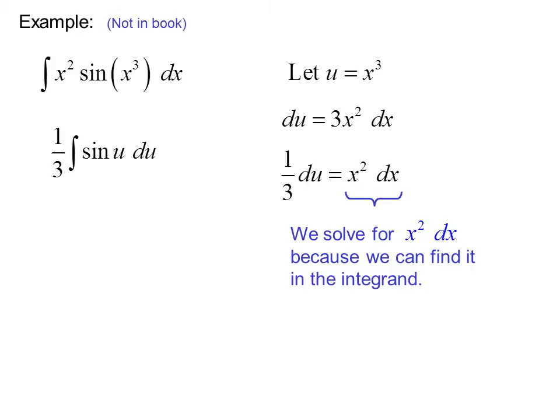So now we have 1 third times the integral of sine u du. Which is negative 1 third cosine u plus c. Or negative 1 third cosine x cubed plus c.